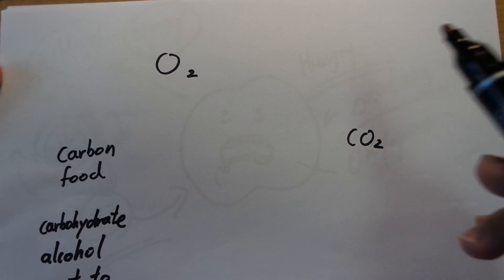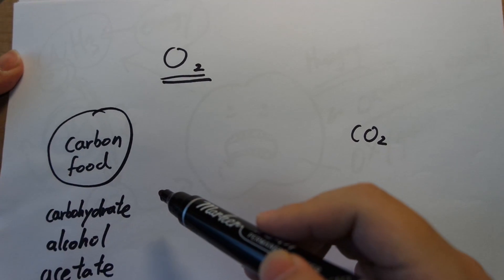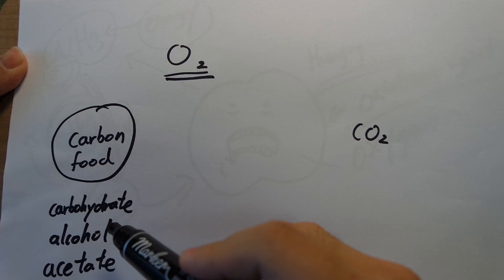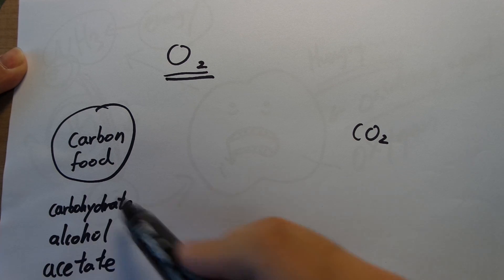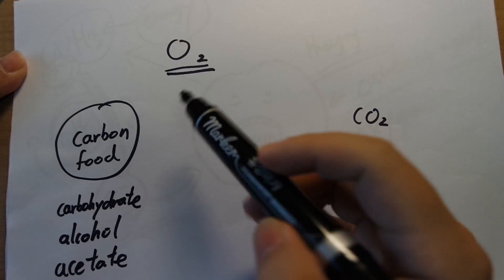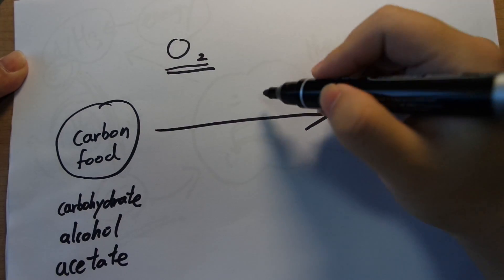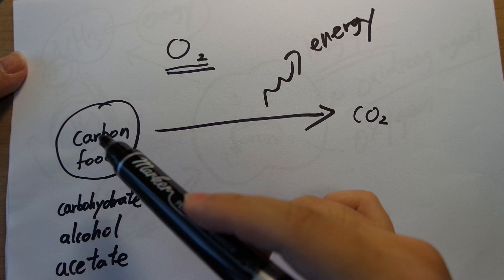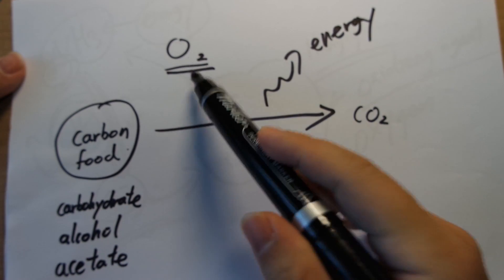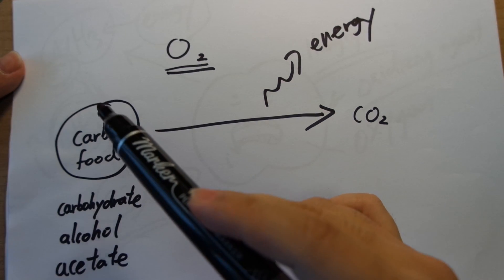Normally, when you have oxygen — which is a very effective oxidizing agent — and you've got something that is a carbon food source, which can be anything from carbohydrates to alcohols like ethanol, vodka, beer, to acetate which is the stuff in vinegar, you have some sort of carbon food source, and you collaborate with oxygen, and you turn it into CO2, and in exchange you get energy. So you can harness the energy inside the carbon food source with the help of oxygen. That is why we breathe oxygen — we need that oxygen in order to release the energy stored in the food we eat.